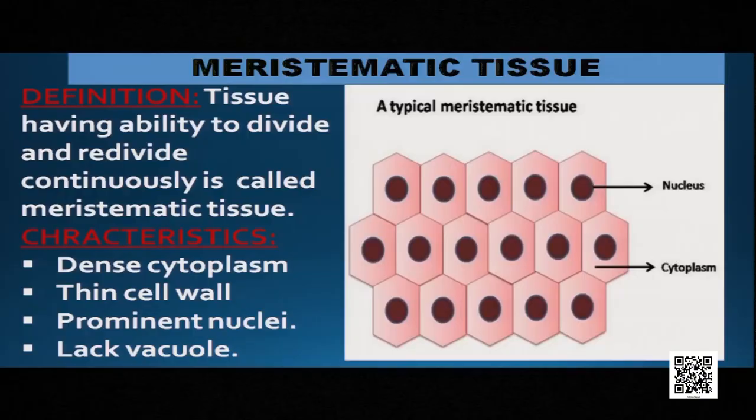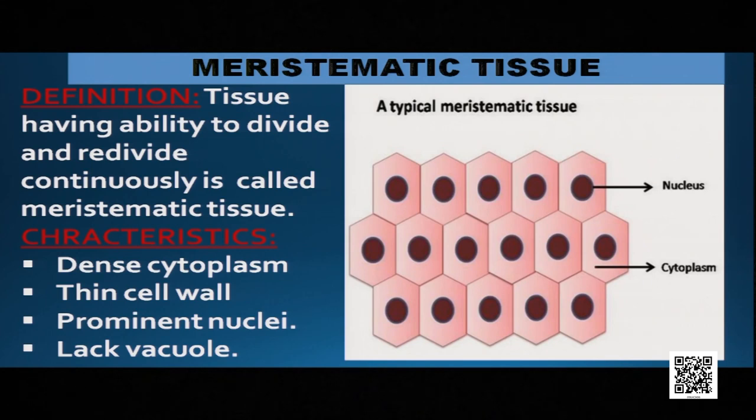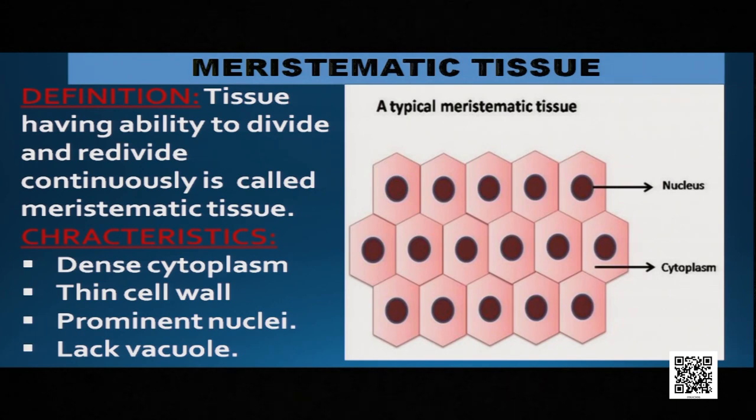Meristematic tissue lacks vacuoles. As we learned in the chapter on cells, vacuoles store food in mature plant tissue. But here there is no need to store food because the tissue is always in a mode of continuous division and re-division. That is why there is no vacuole. So let us see where meristematic tissues are found in the plant.